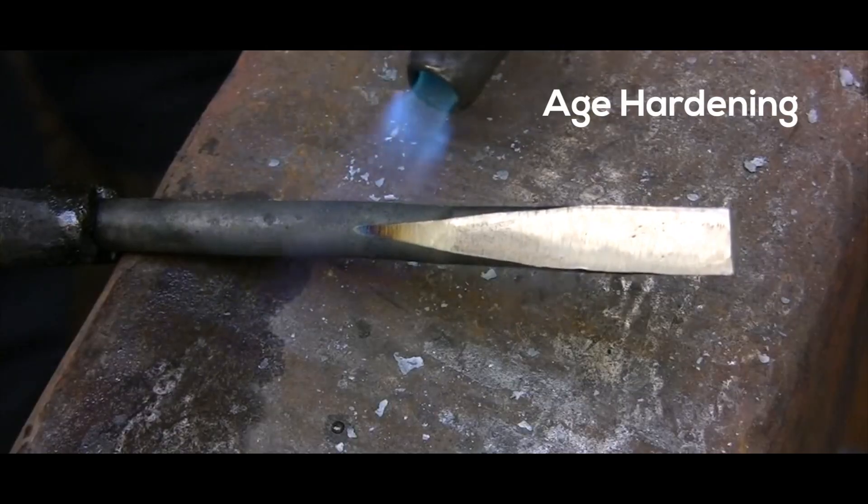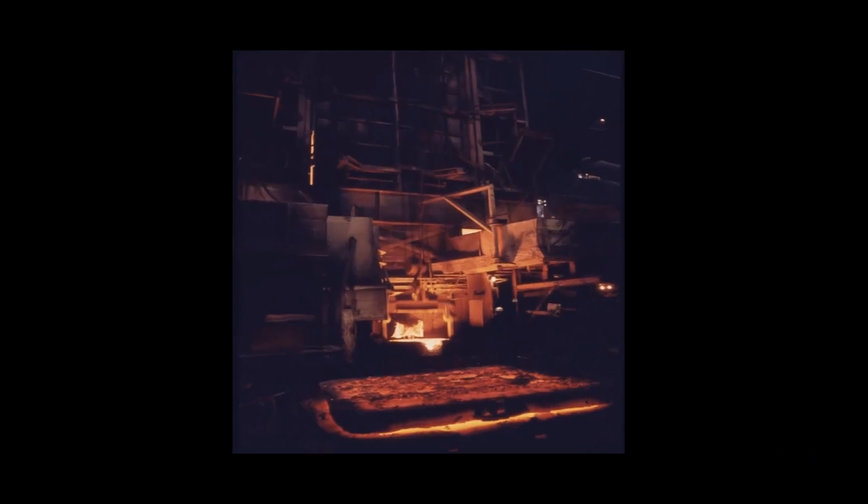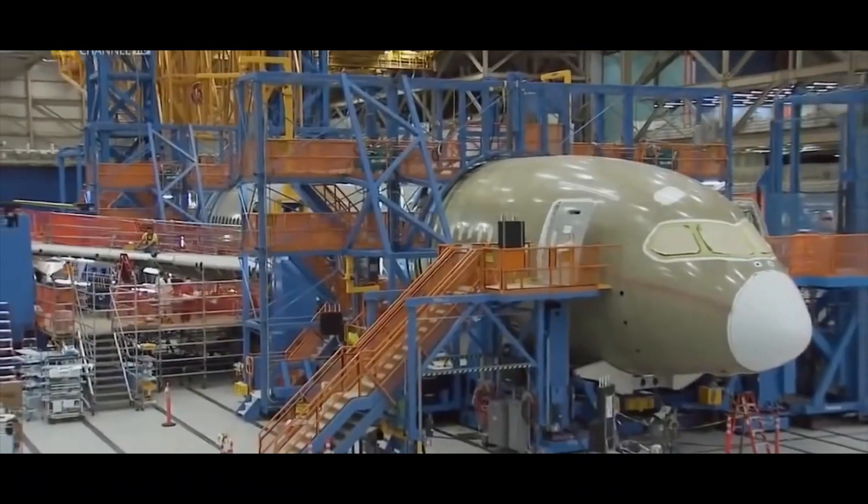Another method is age hardening. This involves water-quenching red-hot metal and leaving it aside for a while. This method is used in the making of 17-4 stainless steel which has specific applications in the petroleum, chemical industries and also in aircraft parts.